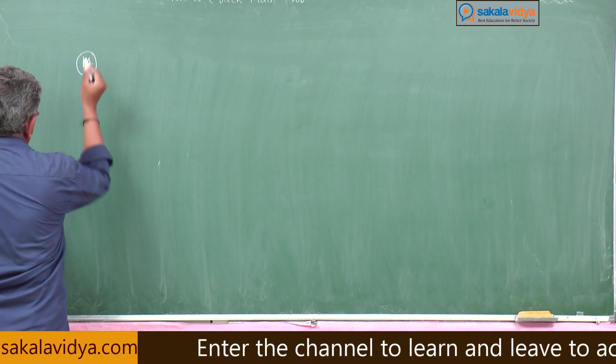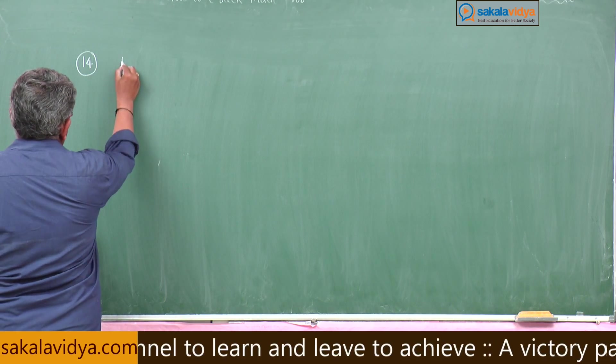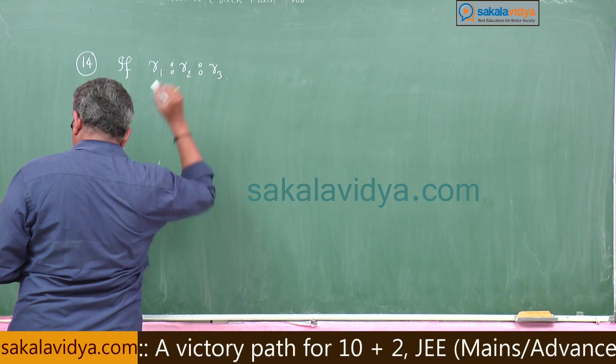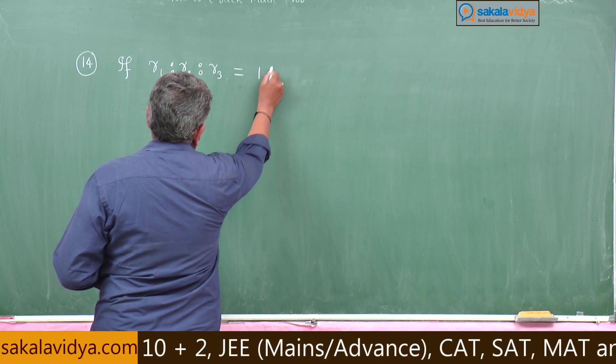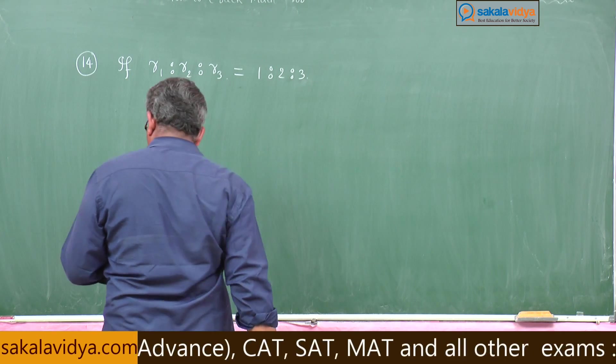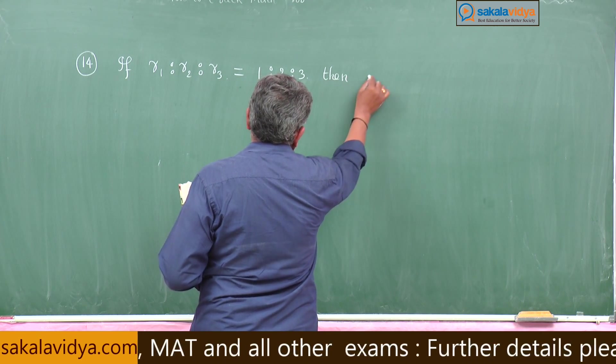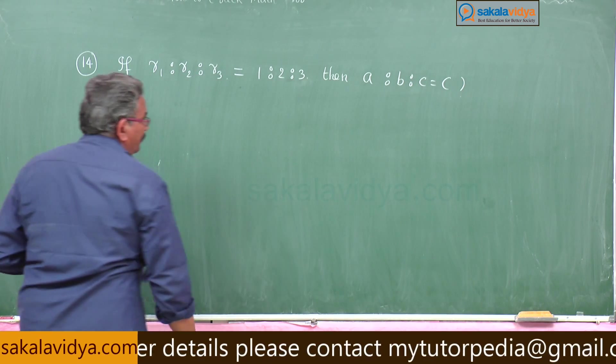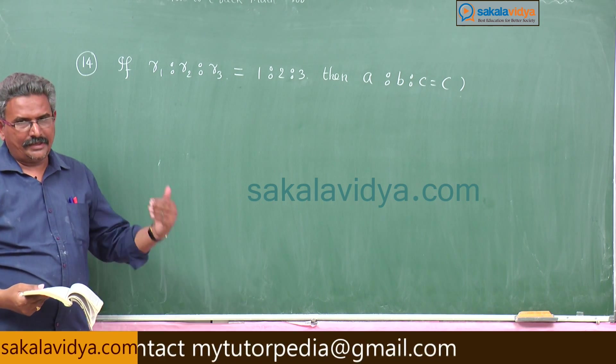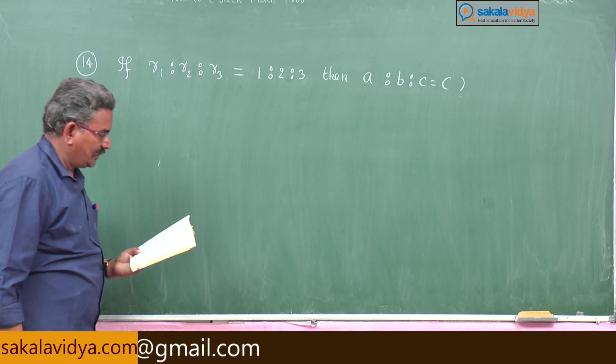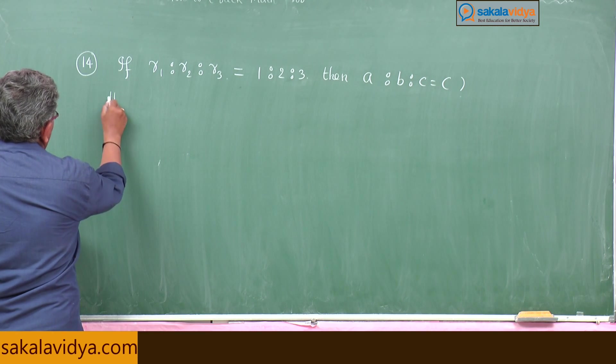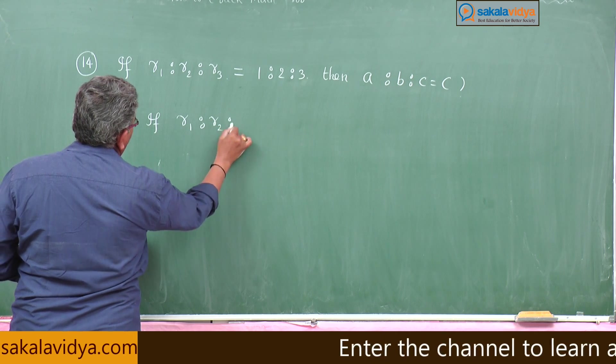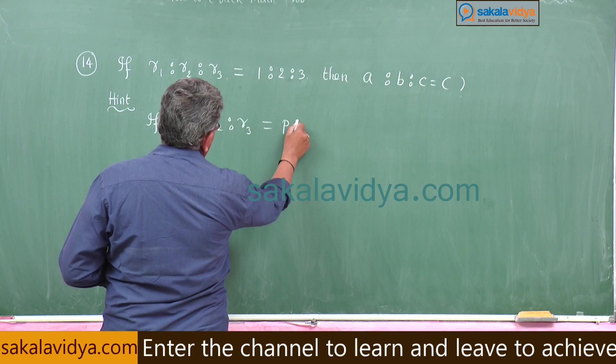14th problem. If r₁:r₂:r₃ is equal to 1:2:3, that means r₁, r₂, r₃ are the ex-radii of the triangle a, b, c. Here also shortcut you remember: if r₁:r₂:r₃ is equal to say p:q:r, then a:b:c is given by p(q+r) : q(r+p) : r(p+q).